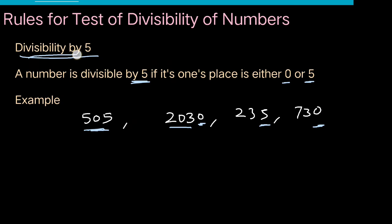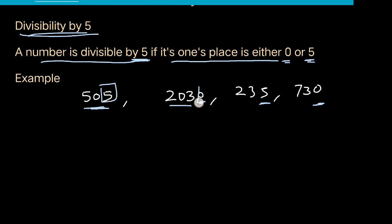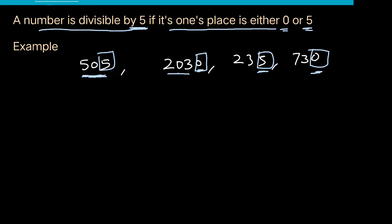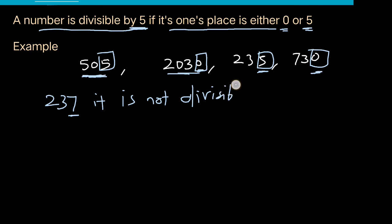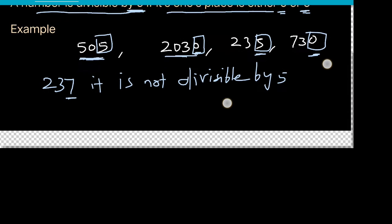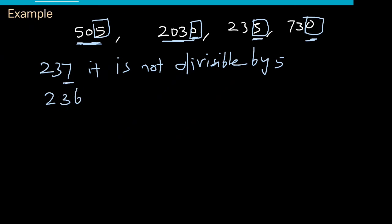Divisibility by 5: a number is divisible by 5 if its ones place is either 0 or 5. So if the last digit is 5, it is divisible by 5. If the last digit is 7, it is not divisible by 5. If the last digit is 5, it is divisible by 5.